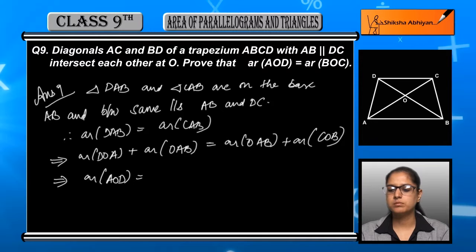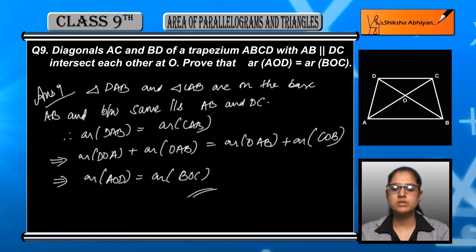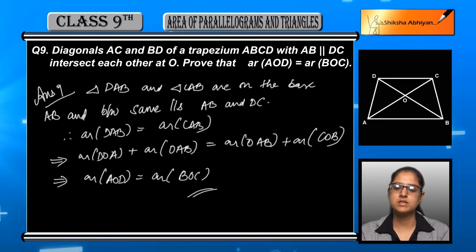So area of AOB plus area of COB. Area of AOB from both sides cancels. So we are left with area of AOD is equal to area of DOC, hence proved.